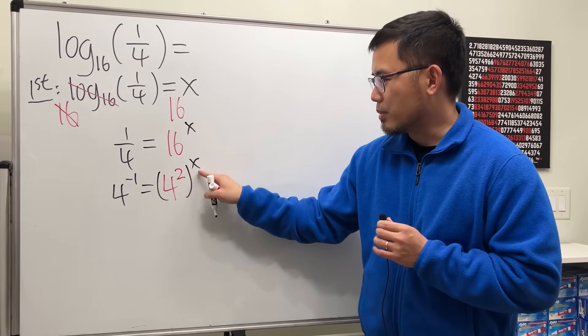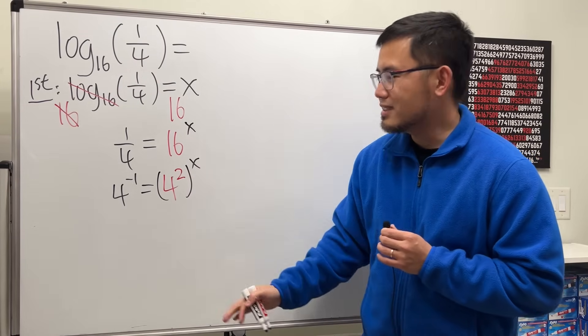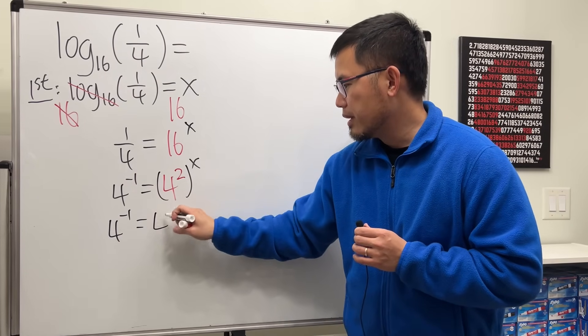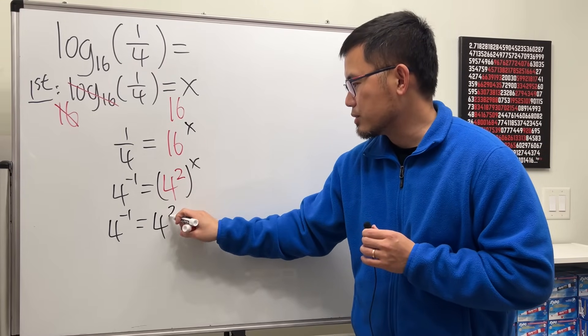Now we can just multiply the exponents because of the rule of exponents. So here we get 4 to the negative 1 equals 4, and then 2 times x, so that's 2x.